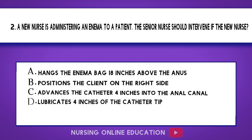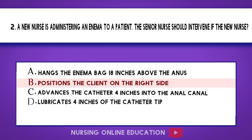Question 2. A new nurse is administering an enema to a patient. The senior nurse should intervene if the new nurse: A. Hangs the enema bag 18 inches above the anus. B. Positions the client on the right side. C. Advances the catheter 4 inches into the anal canal. D. Lubricates 4 inches of the catheter tip. The answer is option B: Positions the client on the right side.